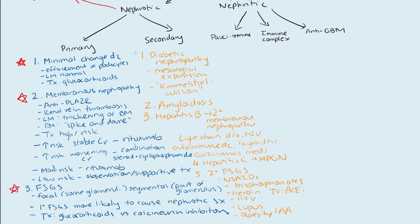To summarize, your secondary causes of nephrotic syndrome are: diabetic nephropathy, amyloidosis, secondary membranous nephropathy (usually from hepatitis B), membranoproliferative glomerulonephritis, and secondary FSGS.